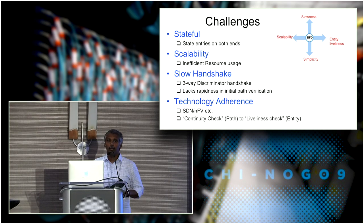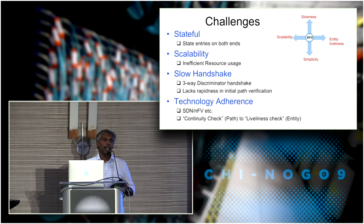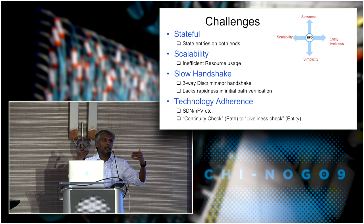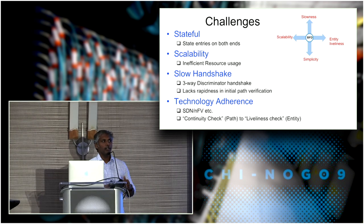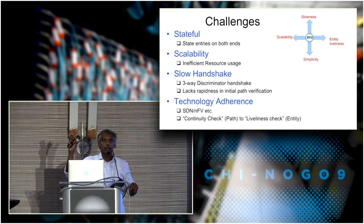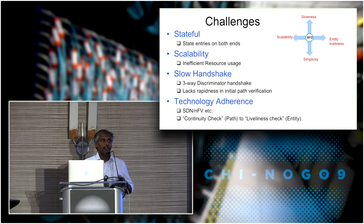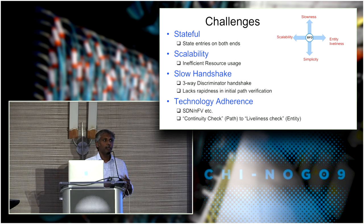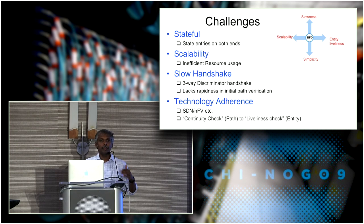There are use cases that are unidirectional in nature — many devices may want to monitor the liveliness of a particular target endpoint. Even though monitoring is unidirectional, BFD's stateful nature creates state entries not only on the initiator but also on the target node. Another challenge is slow handshake — every time a BFD session is established, we negotiate discriminators and timers before sending control packets. Depending on the number of sessions, the time taken to bring all sessions up increases exponentially.